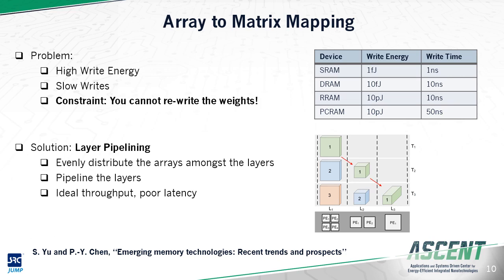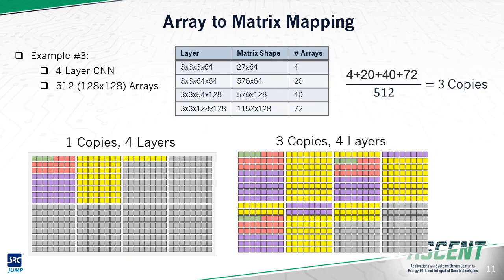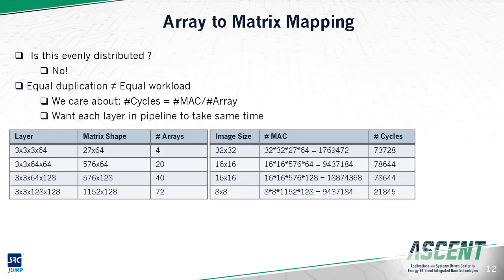Our solution is layer pipelining, where we evenly distribute the arrays amongst the layers and then pipeline the layers in our hardware. As illustrated in the figure on the right, in each time slice each hardware unit is processing a certain layer but with data from a different input batch. This allows us to achieve ideal throughput at the cost of higher latency. We map a single copy of our CNN to the 512-array hardware, and the maximum number of duplicates is found by dividing 512 by the total arrays required for a single copy. The floor of that number is 3, so we can copy our CNN three times. However, since we are pipelining the layers, it is essential they all take nearly the same amount of time, because faster layers must stall for slower layers.